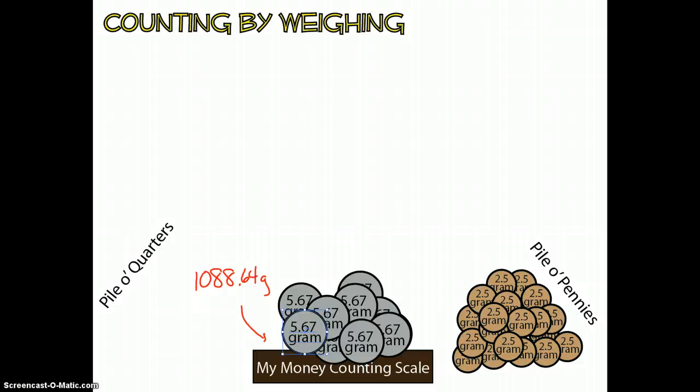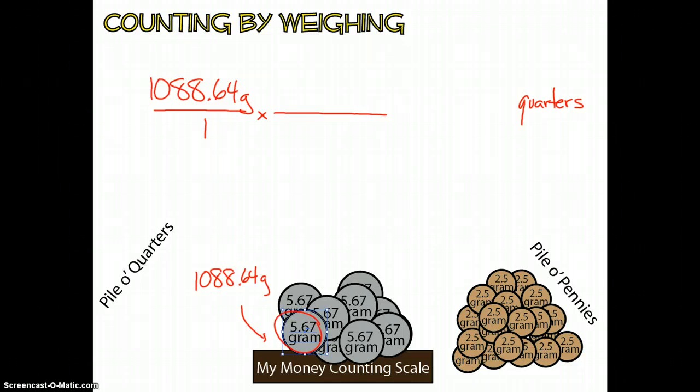So what that is telling us is if we started off with this mass, we go back to our chem slasher approach. We have a total mass of 1,088.64 grams. Now if we wanted to turn this into the number of quarters, we need to find a relationship between those two things. According to what we found on Google, 5.67 grams is the mass of one quarter. So chem slasher wise, we would have 5.67 grams for every one quarter.